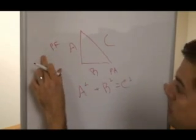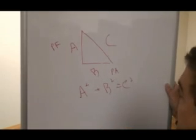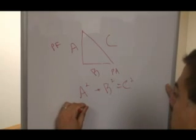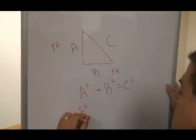If you assign A to be the number of points for, B to be the number of points against, then on average it's going to win A squared over C squared percent of its games.